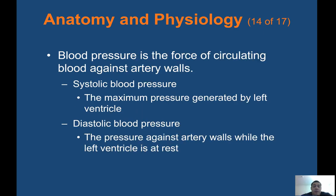Blood pressure is the force of circulating blood against artery walls. Systolic blood pressure is the maximum pressure generated by the left ventricle. Diastolic blood pressure is the pressure against artery walls while the left ventricle is at rest. When you take a blood pressure, the first number is your systolic and the second is diastolic. For example, 120 over 80 — 120 is systolic and 80 is diastolic.